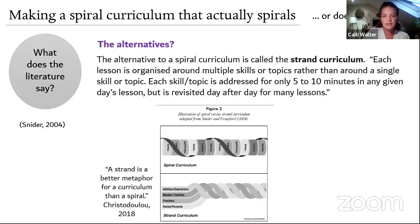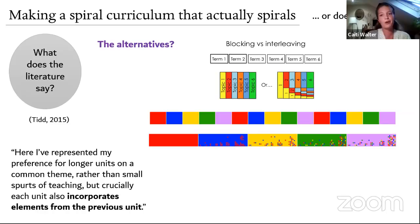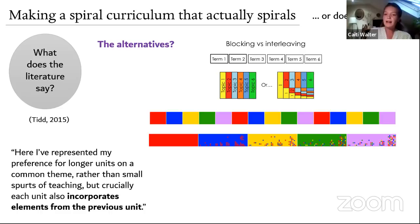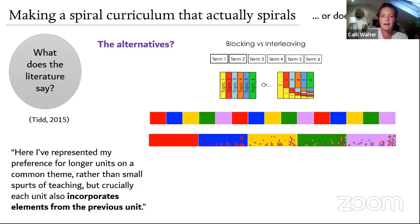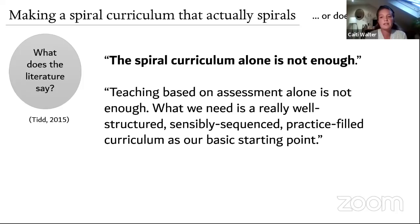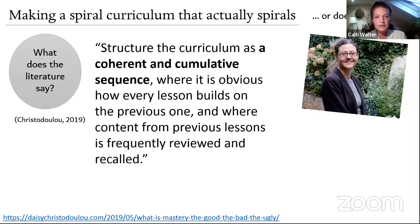Thinking about blocks and interleaving: if you block, you do topic one in the first half-term, topic two in the second half-term, and so on. With interleaving, you go back and revisit ideas. Tidd's model suggests interleaving can be sporadic but you're still blocking — a combination of the two. He also says the spiral curriculum alone is not enough; we need really well-structured, sensibly sequenced, practice-rich curriculum as our basic starting point.